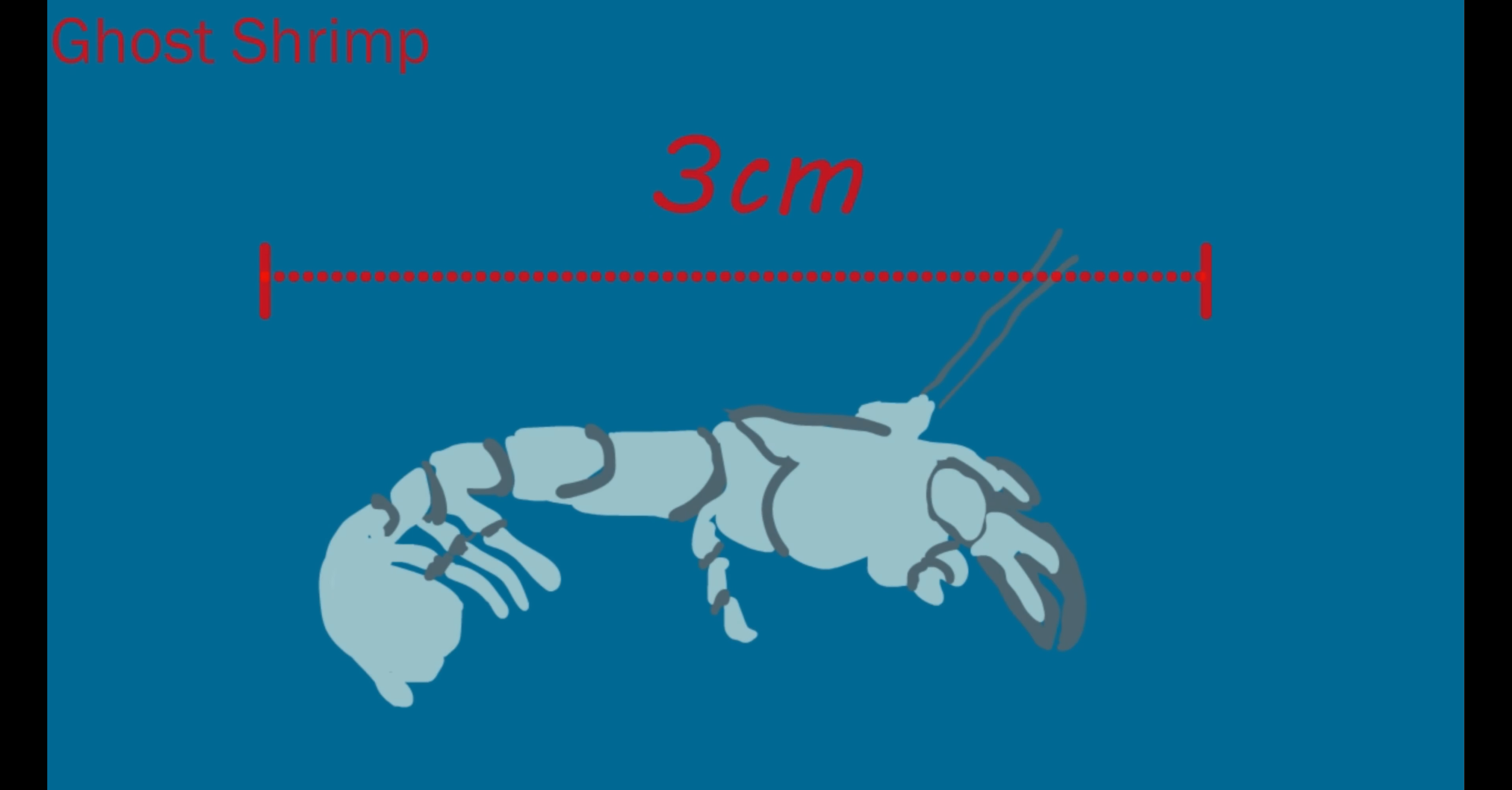Now let's meet our next ecosystem engineer, the ghost shrimp. These shrimp, also called mud shrimp, have exoskeletons too. They are usually pale and about three centimeters across or smaller.